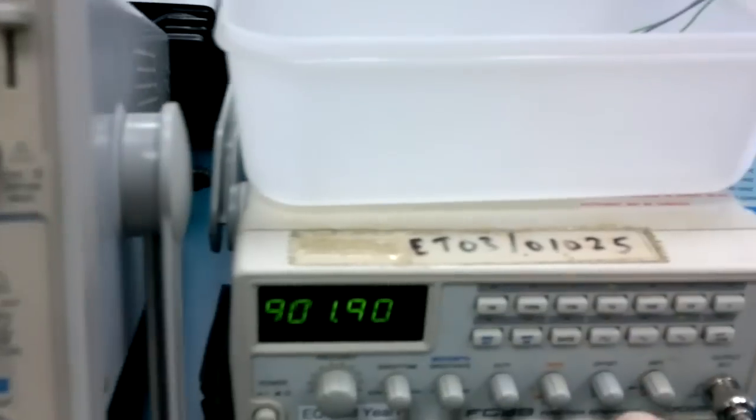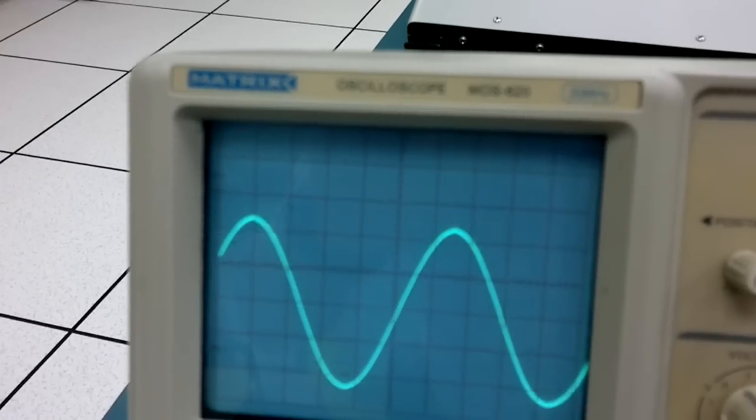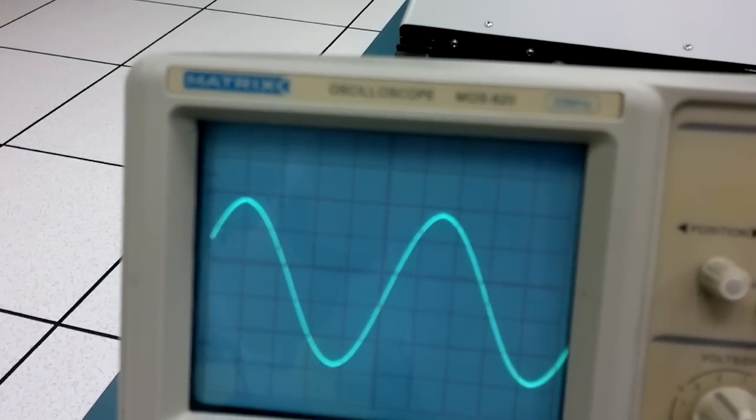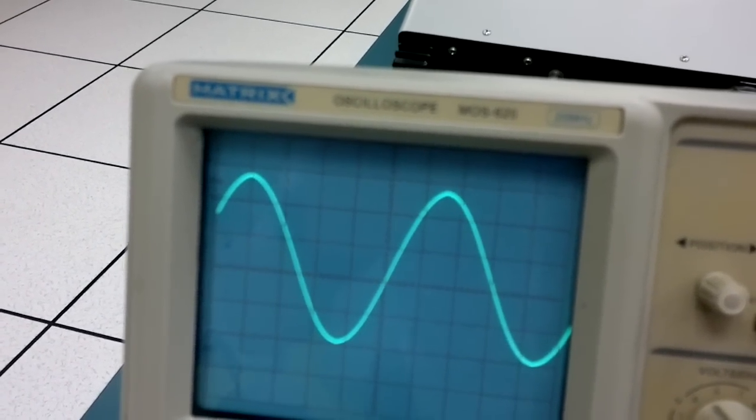Now, let's pull out the offset button. Click. And see what happens. We can now lift it up. We can drop it down. So, we're adding a direct current offset to our signal. We sometimes need this.